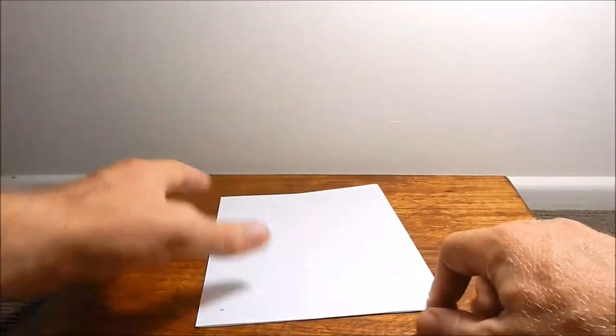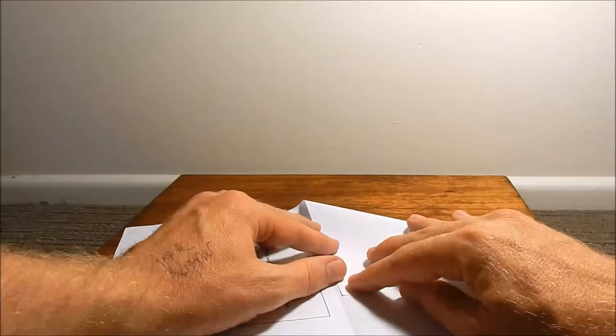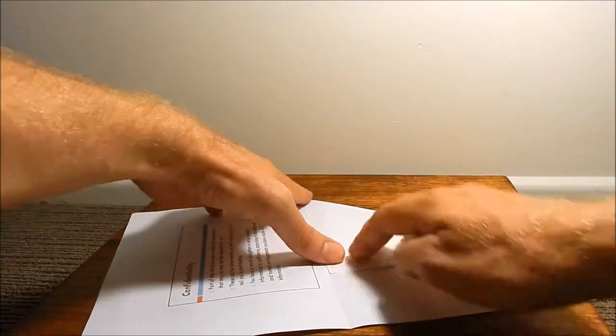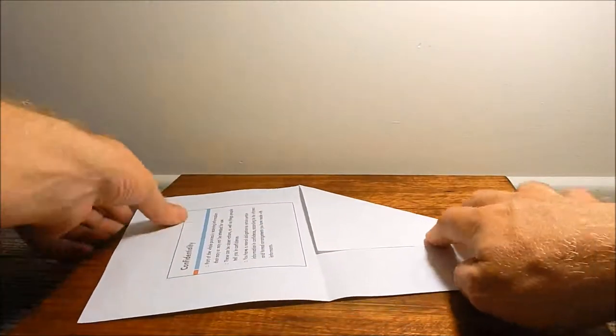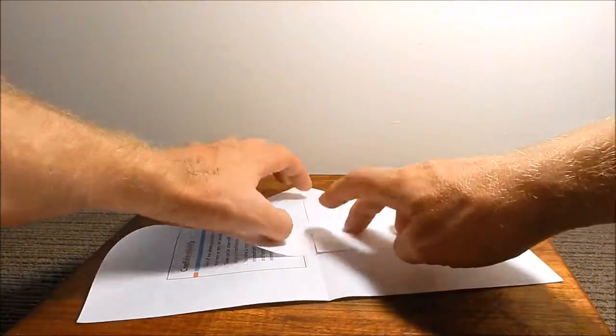Fold the paper in half across the middle, so across the width of it, and fold the corners down to the middle. So fold each corner down to the middle.